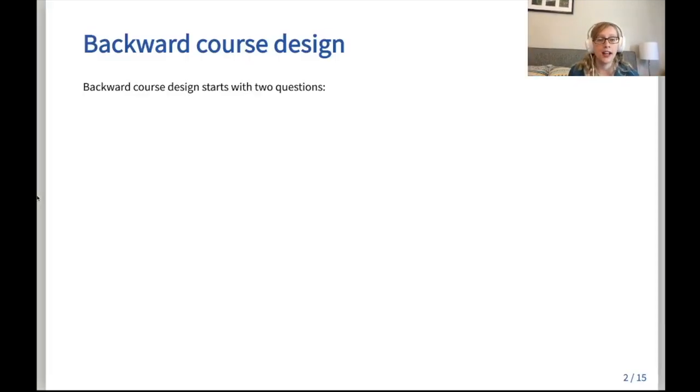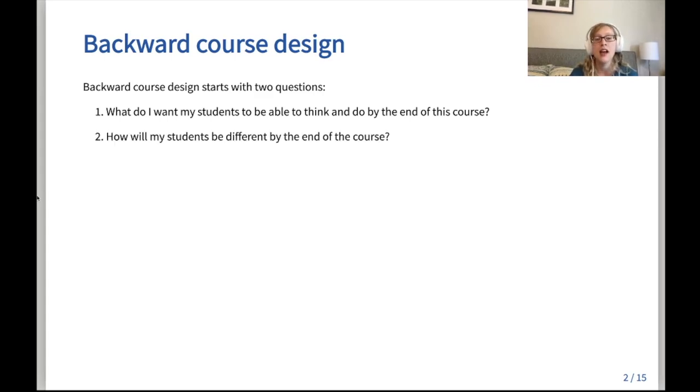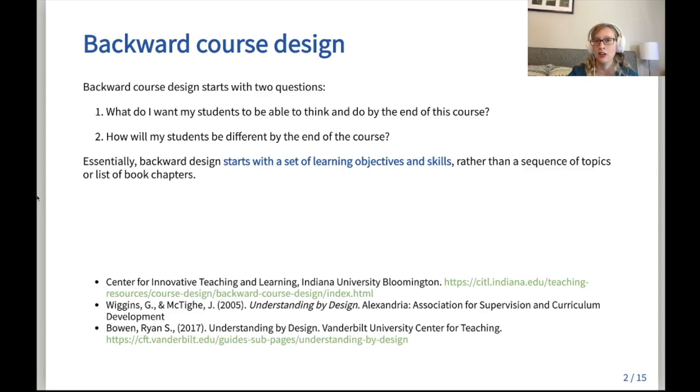So start by defining backward course design. Backward design starts by asking two questions. As the instructor, you ask yourself first: what do you want your students to be able to think and do by the end of the course? What are the knowledge areas or competencies you want your students to achieve? And how will your students be different? When you're designing your class using backward design, you start with the learning objectives instead of a topic list or a book chapter.